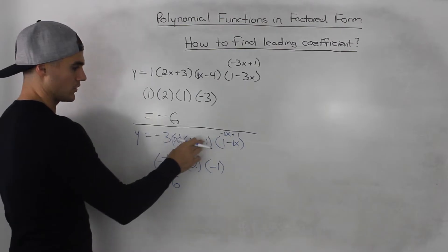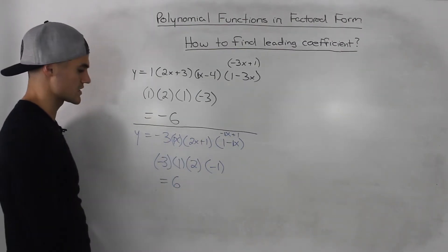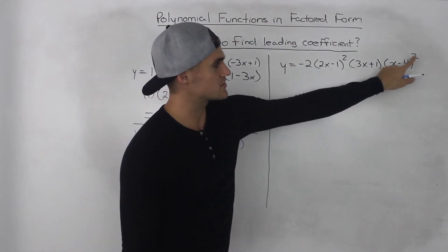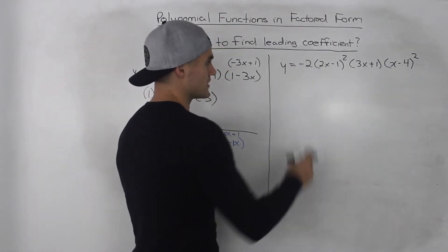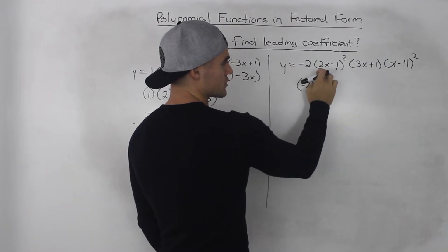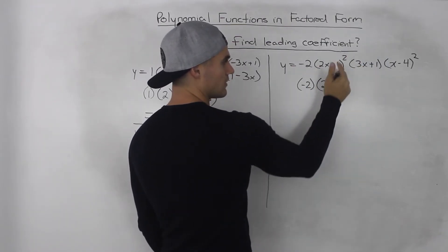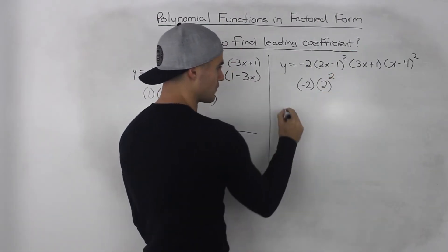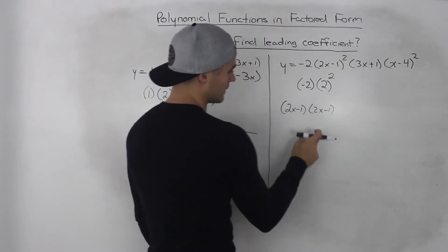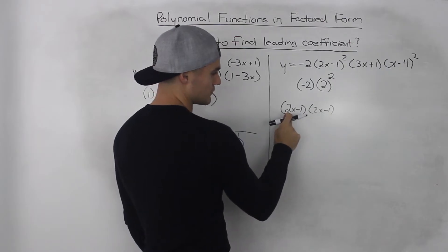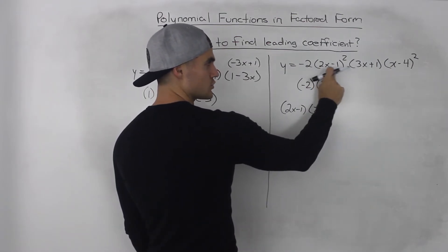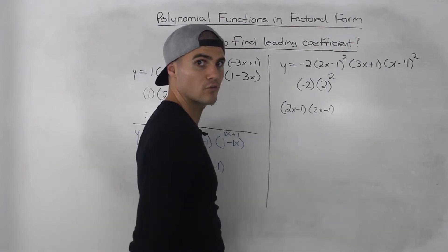So if we took this polynomial function and expanded it, the leading coefficient would be positive 6. Next example: y is equal to negative 2, times (2x minus 1) squared, times (3x plus 1), times (x minus 4) squared. Same procedure applies — the number in front is negative 2. Taking the leading coefficient of the first bracket: it's 2, but because that whole bracket is squared, we have to square that leading coefficient. Because if you think about it, 2x minus 1 times 2x minus 1 means you'd have 2 times 2, so the leading coefficient would be 4.